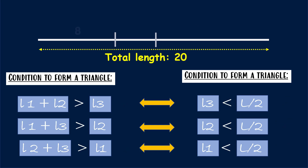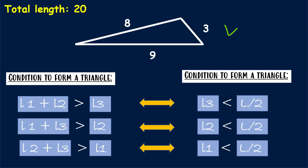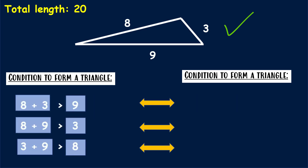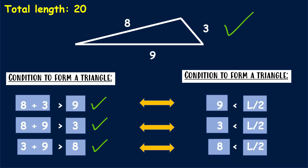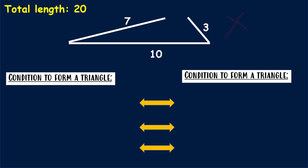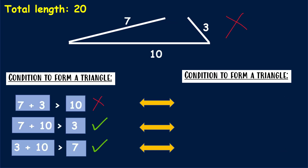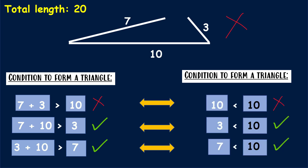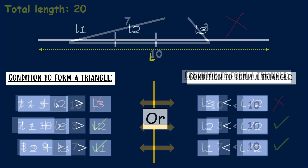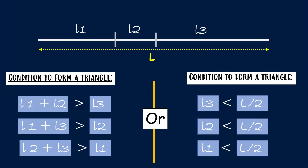Let's quickly see an example. The total length 20 is divided into three pieces of lengths 8, 3, and 9. They can form a triangle because they satisfy the condition that the sum of any two pieces is greater than the third. Checking the other condition, L/2 is 10, and each piece is less than 10, so all conditions are satisfied. But if we get pieces of 7, 3, and 10, they will not form a triangle because 7 plus 3 is not greater than 10, and one condition fails: 10 is not less than 10. Both sets of conditions give the same results.